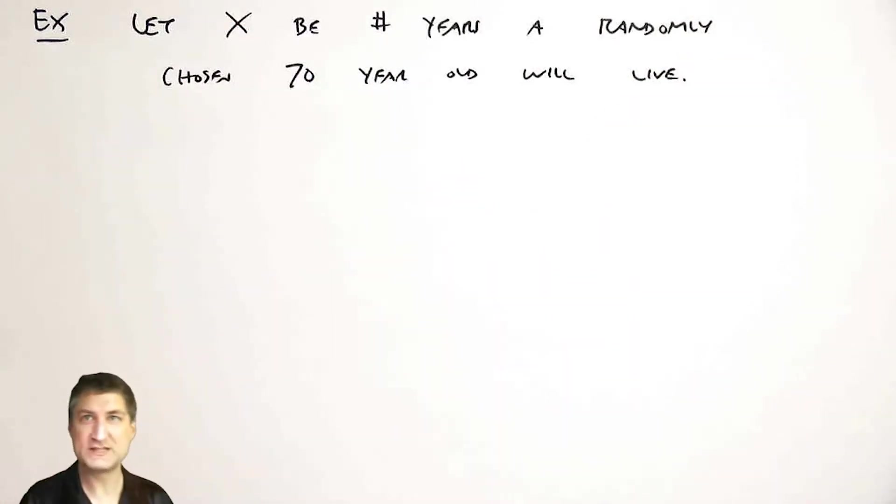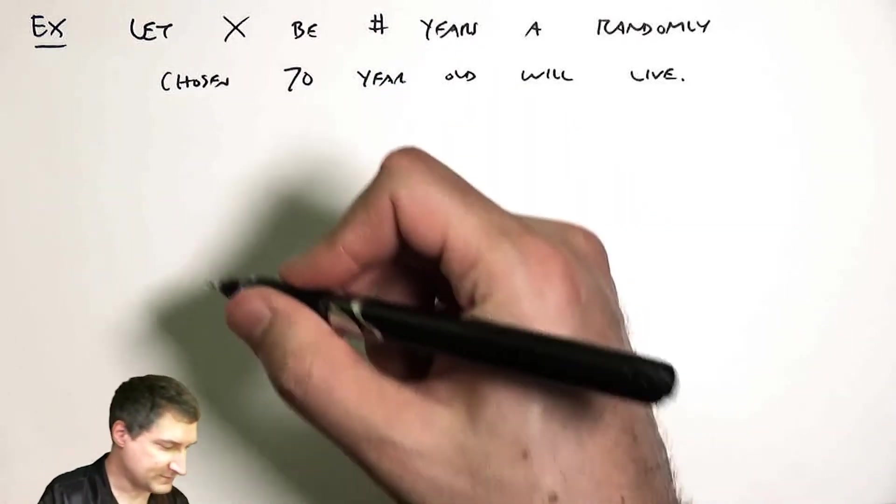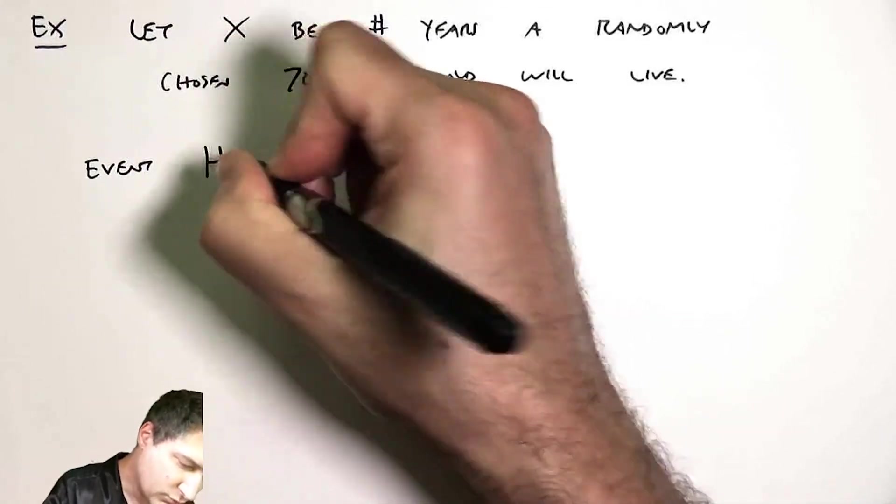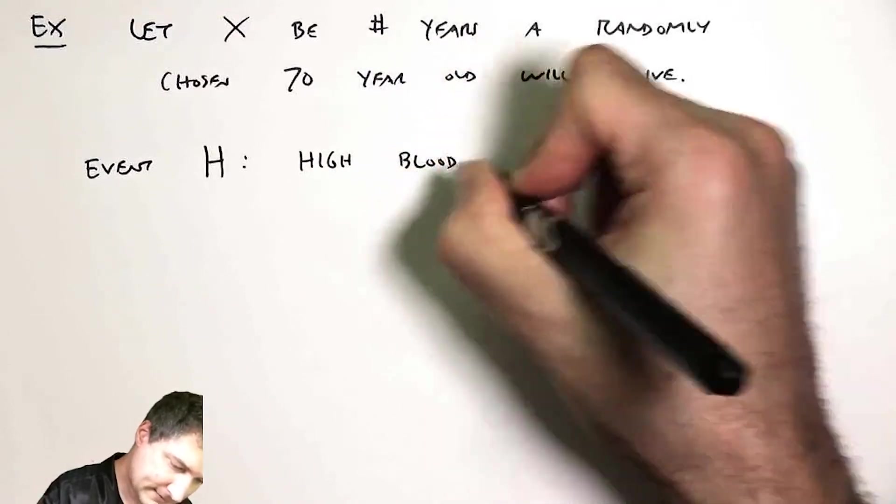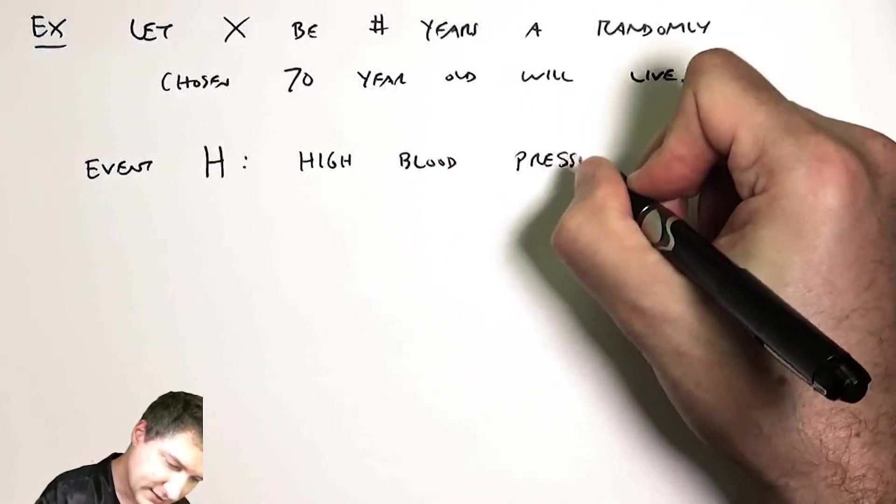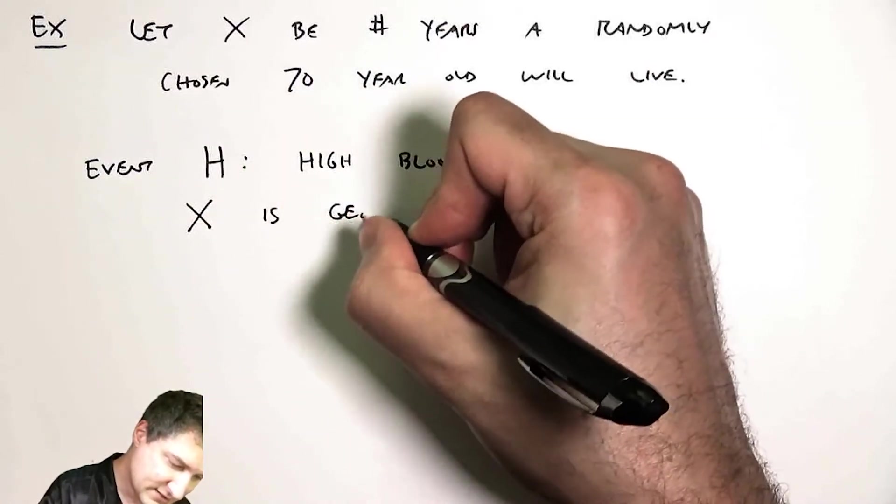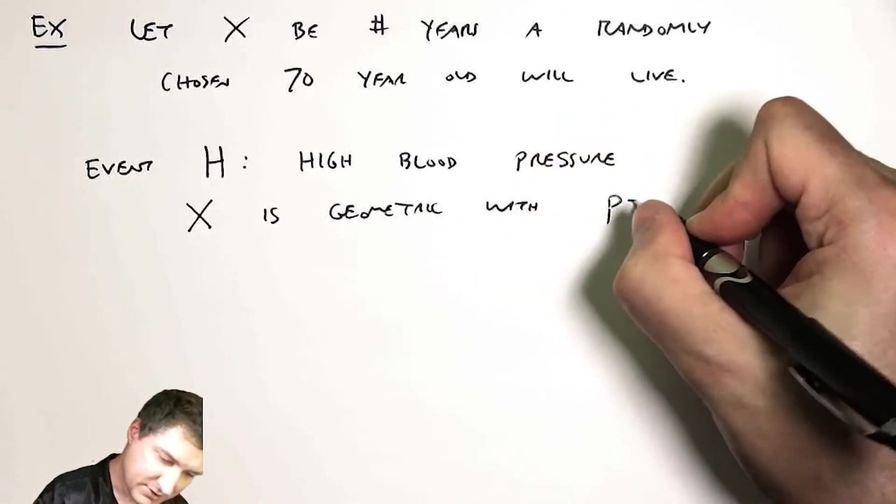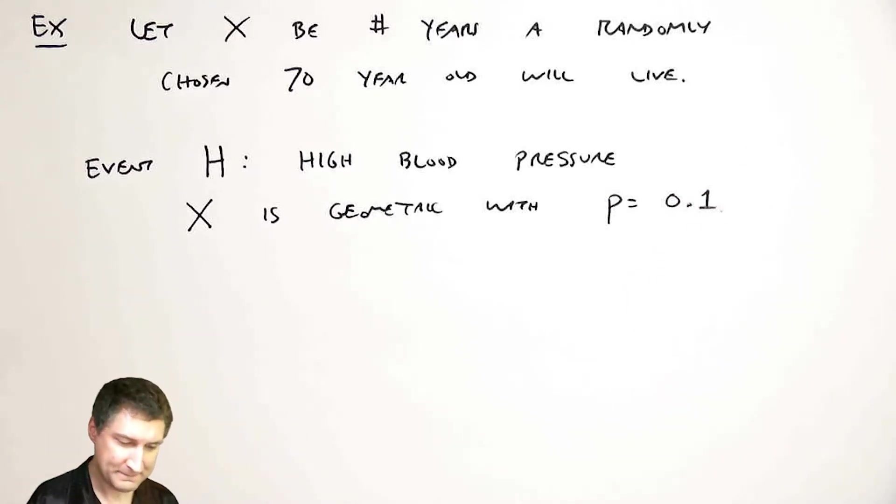So let's suppose that we split the population up into two classes: high blood pressure and normal blood pressure. So I have a partition. One event, H is high blood pressure. And let's imagine that here, X is geometric with parameter P equals 0.1. This is like giving you the conditional PMF of X given H.